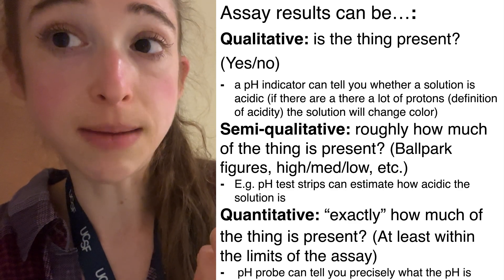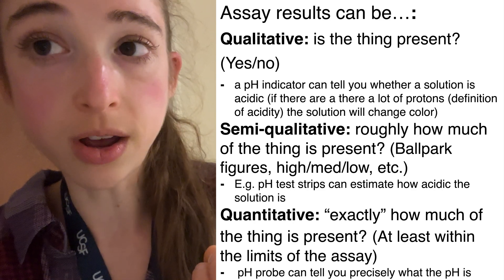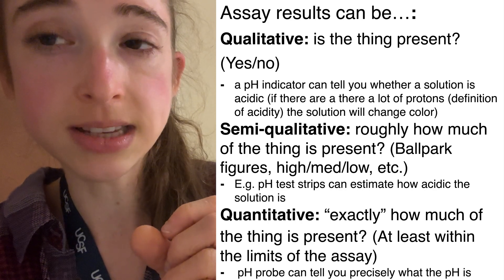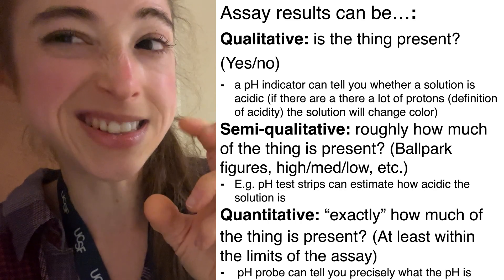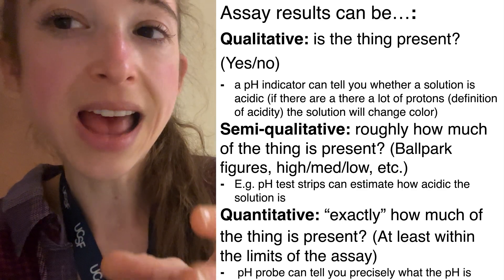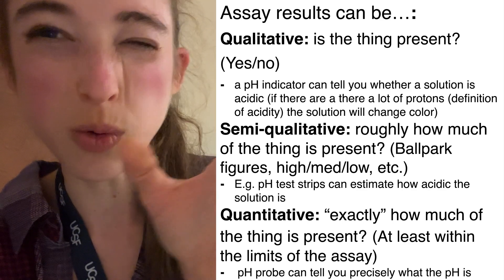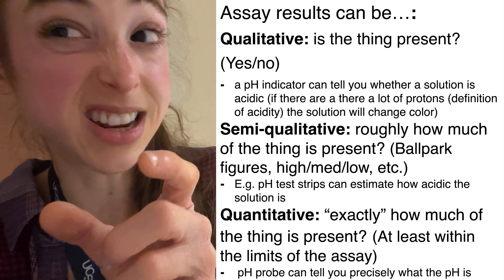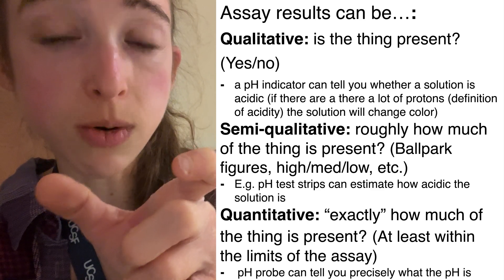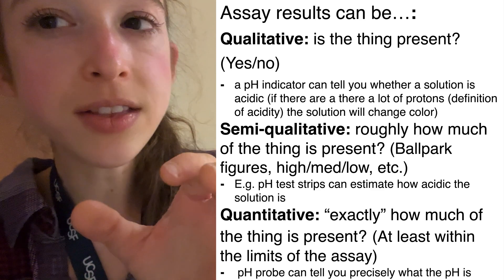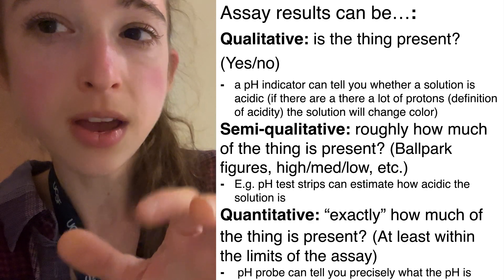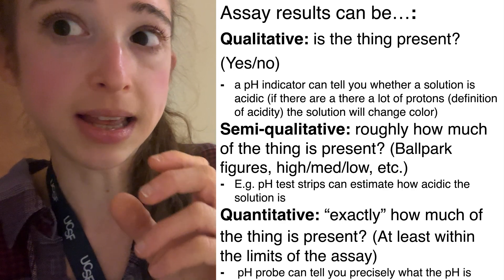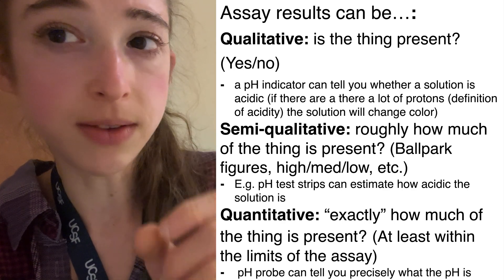A qualitative assay might tell you whether a molecule is present — yes or no. A quantitative assay tells you how much of the molecule is present — exactly how much, at least within the range of the assay. There's a quantitative range where it gives you an accurate number, but it only guarantees accuracy within that specific range. And then there's the in-between: the semi-quantitative. With this, you're getting a ballpark figure or an estimate — something like high, medium, or low — but not actual specific values.